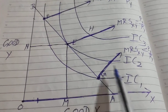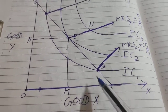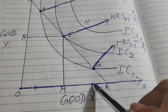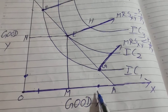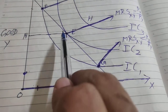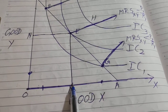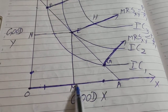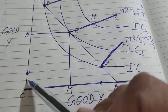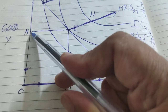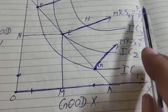Next, agar consumer G point pe hai — that is when MRS_xy is lower than Px upon Py. Consumer X ki zyada quantity buy kar raha hai aur Y ki kam buy kar raha hai. Ab agar consumer ne G se E point tak pahunchna hai to ushe X ki quantity reduce karni padegi — he will buy less of X. Ushe OM quantity X ki sacrifice karni padegi aur Y ki consumption yahan se N tak increase karegi. He will again reach the state of equilibrium when MRS_xy equals Px upon Py.